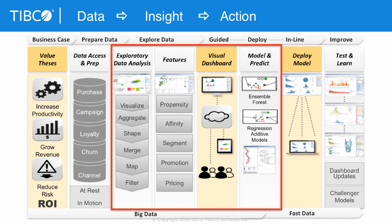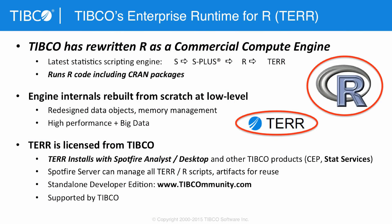We're in the section where we're looking at data. We've looked at it in Spotfire, found some features, and we're building out dashboards and predictive models. In this chunk of the analytics workflow, we've rewritten R as a commercial compute engine. This is an evolution from the original S language. We've taken our engineering prowess to create our own interpreter runtime engine for R that runs R code, including all CRAN packages — rebuilt from scratch at a very low level so the engine is very high performance, fast, and runs on big data.